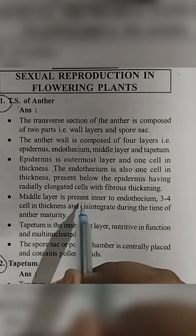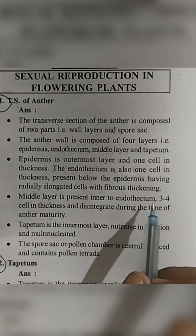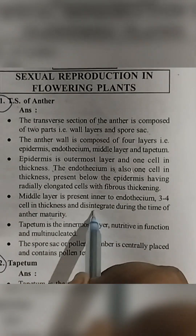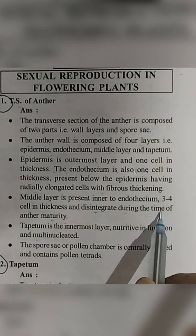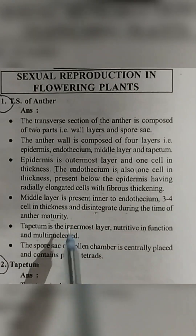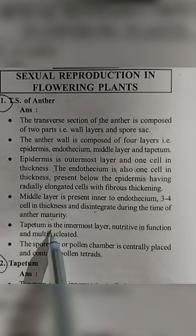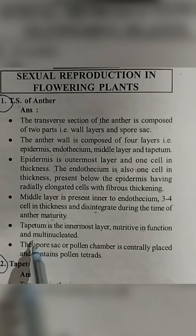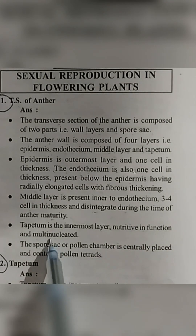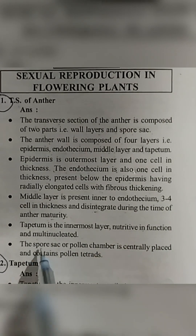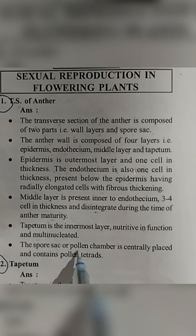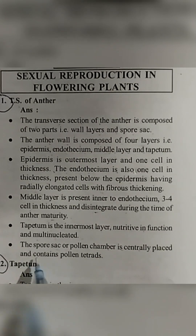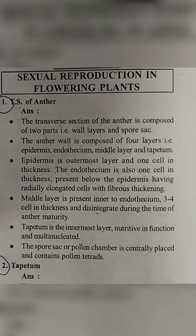The middle layer is present inner to the endothesium, three to four cells in thickness, and disintegrates during the time of anther maturity. The tapetum is the innermost layer, nutritive in function, and multinucleated. The spore sac or pollen chamber is centrally placed and contains pollen grains.